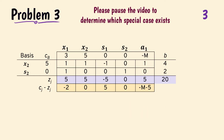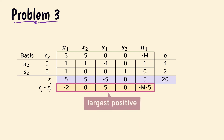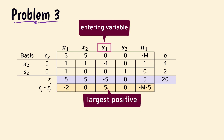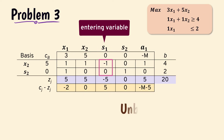Problem 3. In this tableau, the only positive value in the net evaluation row is 5, which means s1 should enter the basis next. However, none of its column values is positive, which indicates we have unboundedness. In essence, s1 can increase indefinitely without violating any of the constraints.